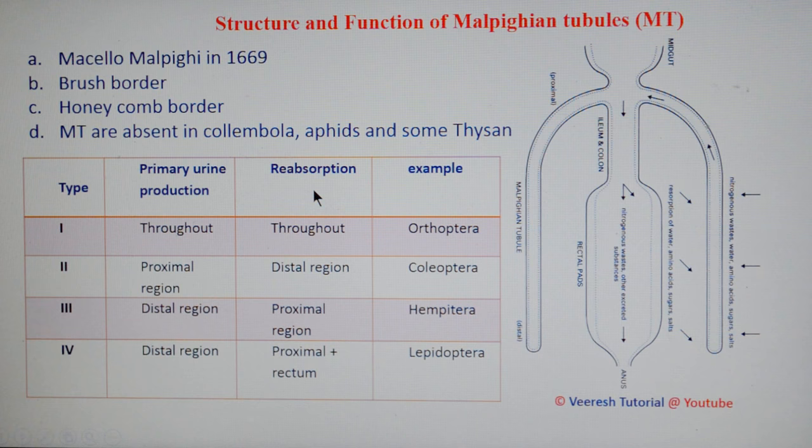In Lepidoptera, the distal region performs primary urine production whereas the proximal region along with the rectum is involved in reabsorptive function.